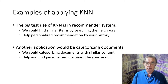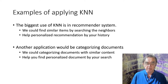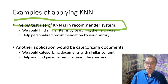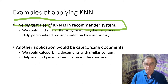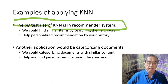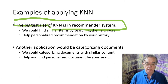It doesn't make any difference if it's in a vector space or non-vector space — the distances are all you need. You use k-nearest neighbor very heavily in recommender systems, where you find similar items, similar users, similar objects, by searching for the neighbors using a particular distance function calculated from properties of users or items.